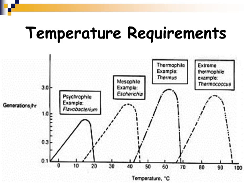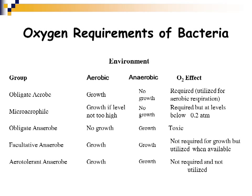Not only do bacteria require specific temperature ranges for growth, they also require specific oxygen atmospheres. The categories of bacteria regarding oxygen are the obligate aerobes, the microaerophiles, the obligate anaerobes, facultative organisms, and aerotolerant anaerobes. Obligate aerobes are bacteria that need oxygen and must be in an aerobic environment in order to grow.